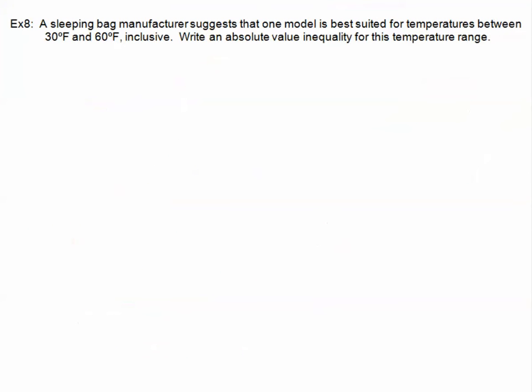Let's look at one last example. Here's our last real-world example. A sleeping bag manufacturer suggests that one model is best suited for temperatures between 30 degrees and 60 degrees. Inclusive. Inclusive means that we get to include those two extreme temperatures. Write an absolute value inequality for this temperature range.